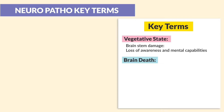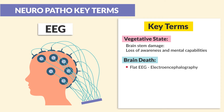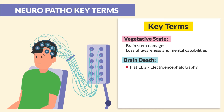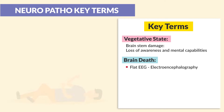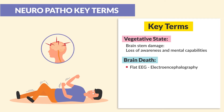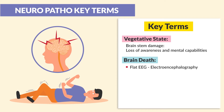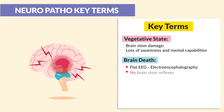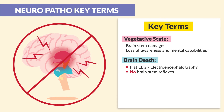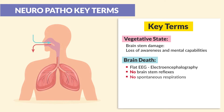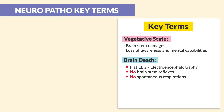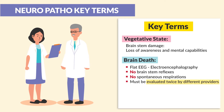The next key term is brain death. Brain death is diagnosed with a flat EEG, an electroencephalography. This is a test that detects abnormalities in brain waves, or in electrical activity of the brain, commonly used to diagnose the severity of chronic seizures. With brain death, there are no brainstem reflexes and no spontaneous respirations. This type of death must be evaluated twice by different providers.